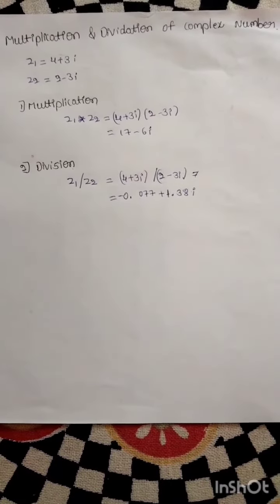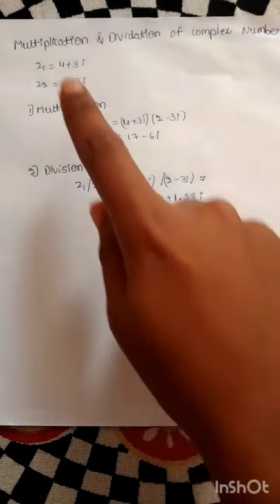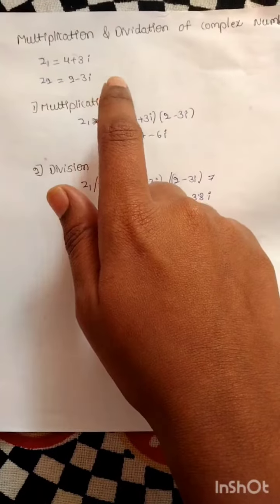Let us take two complex numbers, z1 and z2. z1 equals 4 plus 3i, z2 equals 2 minus 3i.